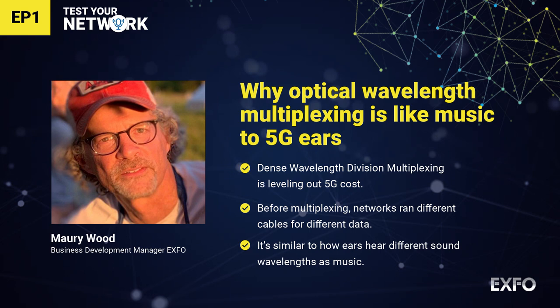Going back to wavelength division multiplexing, you need to have these different wavelengths, and the relationship I'm referring to is the lasers required to generate those different wavelengths. Those, where in the past they were cost prohibitive — and also the receiver technology — led to DWDM being used only in core networks where the very highest bandwidth was required to get to data centers and things like that. At the component level, those costs have come down so much now that we will see those components used in access networks that connect right out to these radio base stations. That remarkable decrease in cost means it is now feasible to use DWDM in these access networks for 5G.